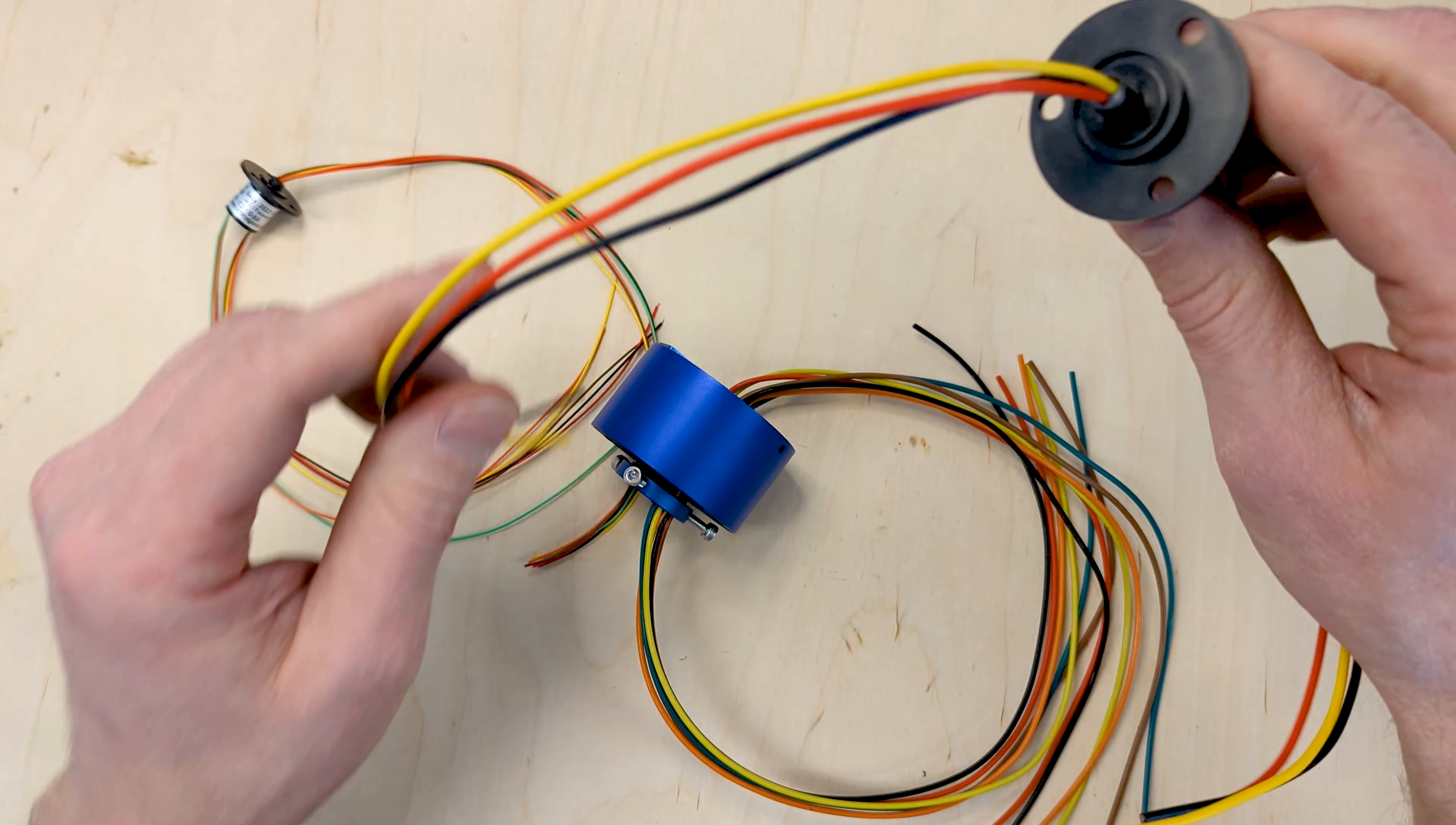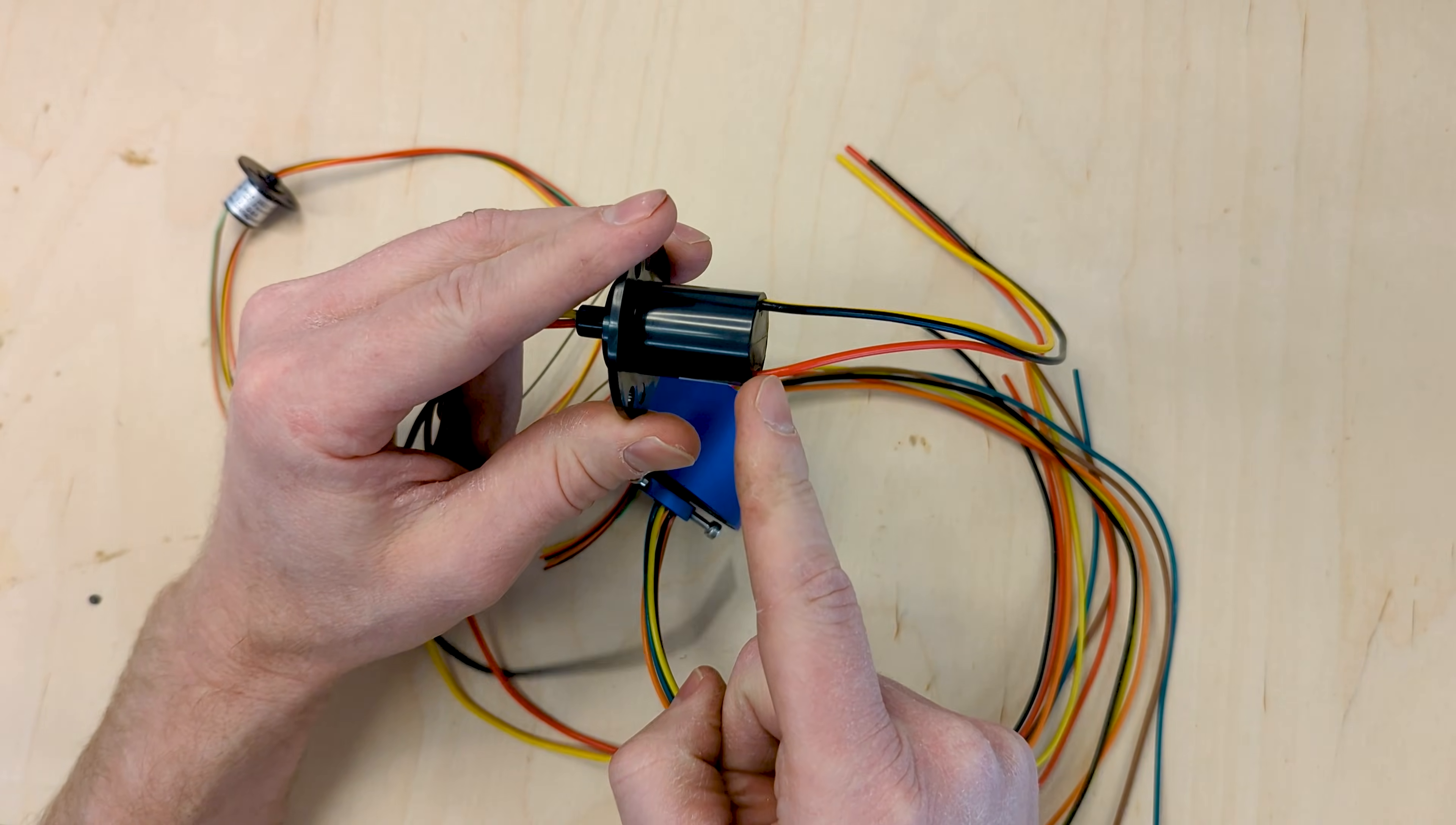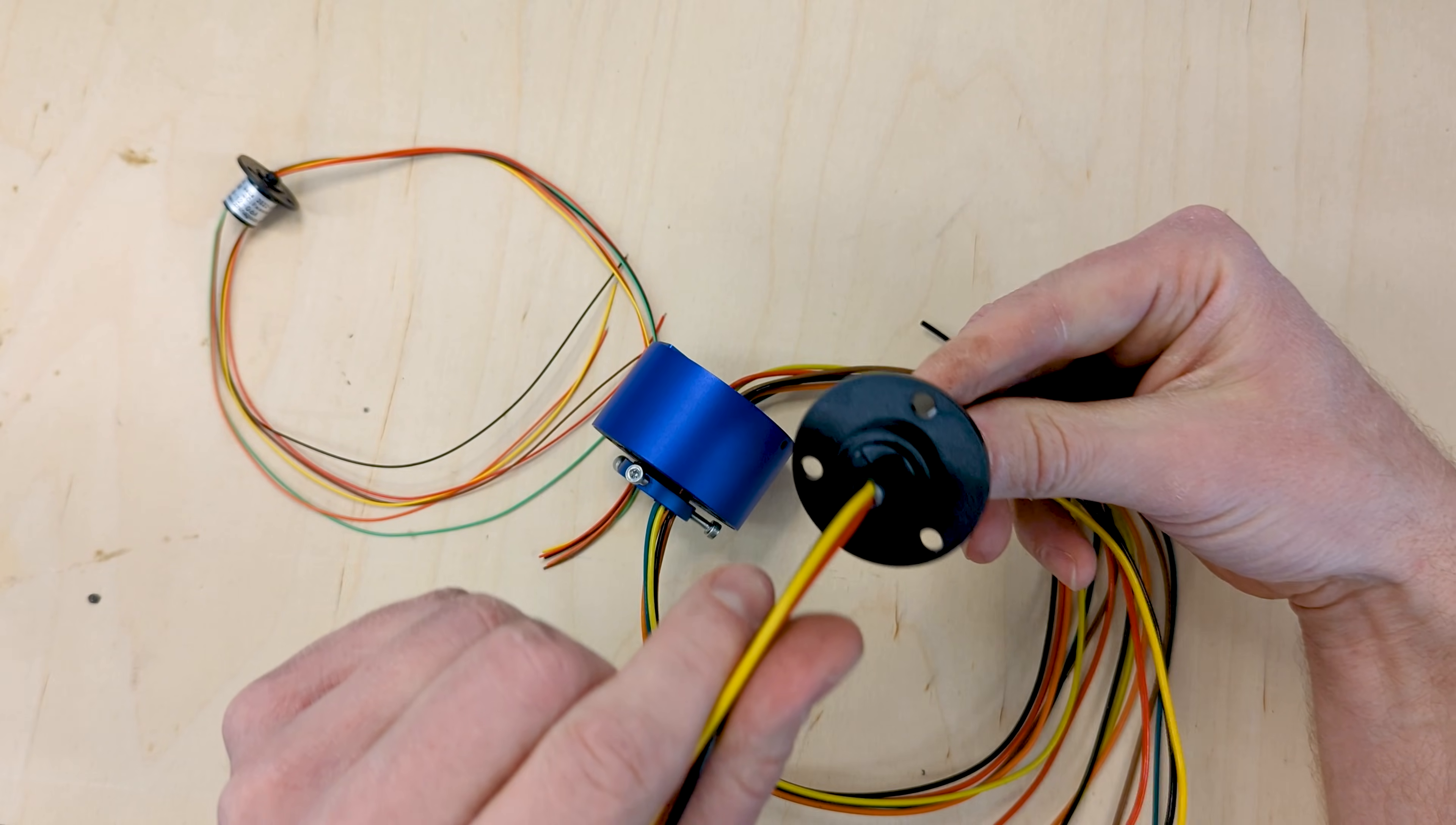For a larger slip ring to transfer power, you can see this one has a larger wire gauge so it can handle a lot more power. Once again, this is the stationary end and it has mounting holes. That's usually how you can identify it.